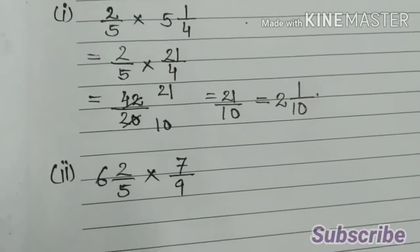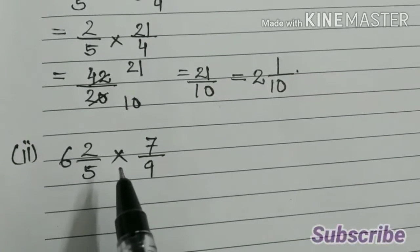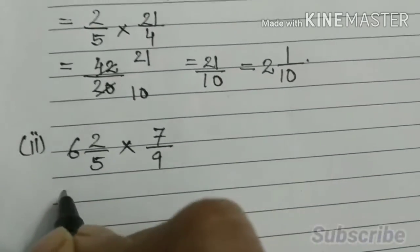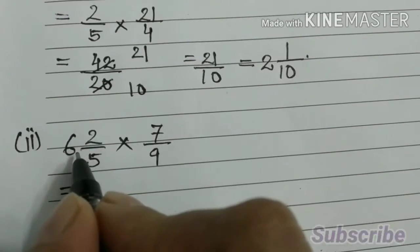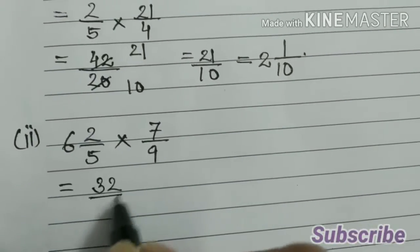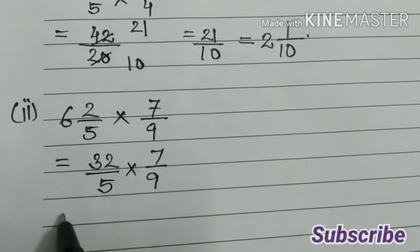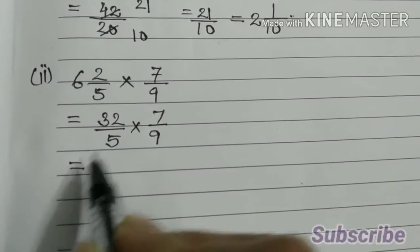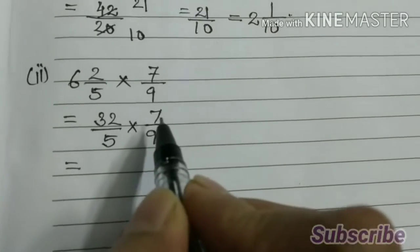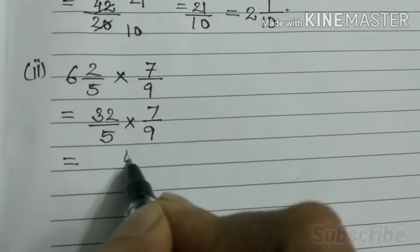Second part: 6 2 by 5 into 7 by 9. 6 5s are 30 plus 2, 32 by 5 into 7 by 9. That is equal to 32 into 7. So 7 2s are 14.